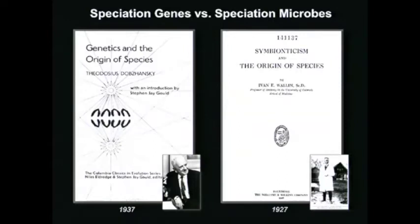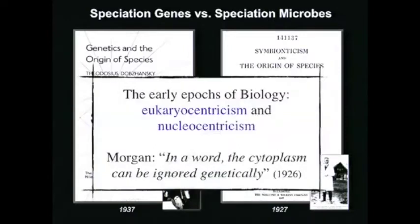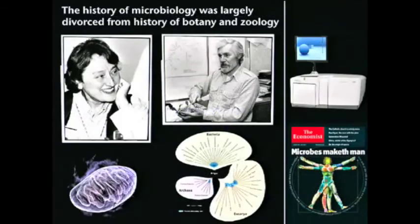The early eras of biology were largely missing microbiology. We have Darwin focusing on animals and plants — a eukaryocentric era. We have the modern synthesis being a nucleocentric era. Even T.H. Morgan said whatever Wallin was observing in the cytoplasm could be ignored genetically. The history of microbiology is largely divorced from the history of botany and zoology. But if anything is teaching us today, it's that we're seeing a merger of these three big fields in the context of host-associated microbiomes.